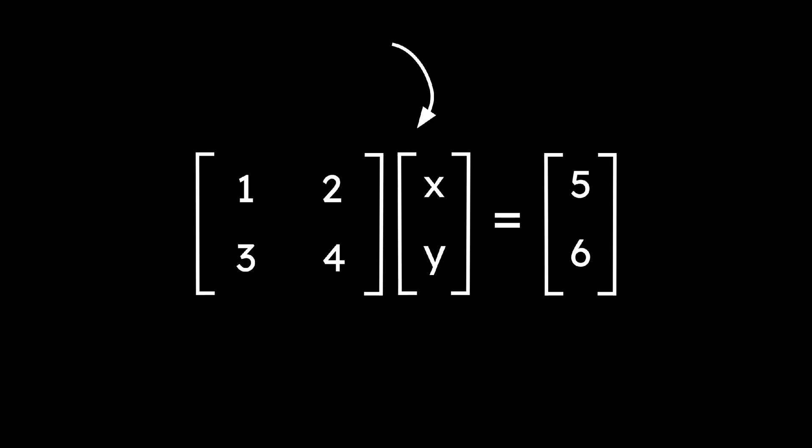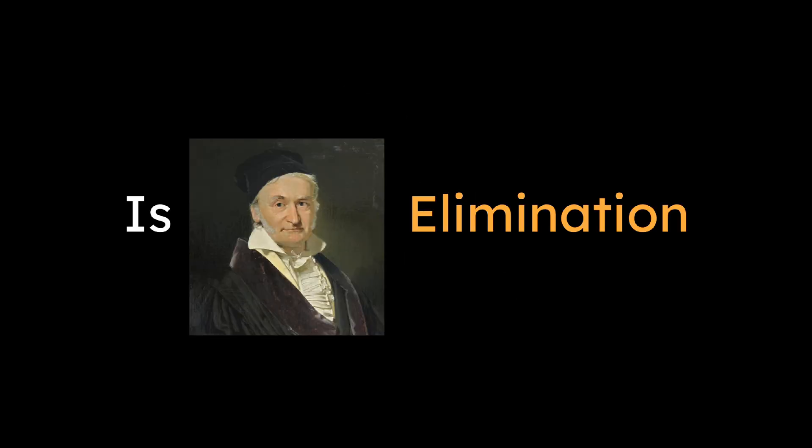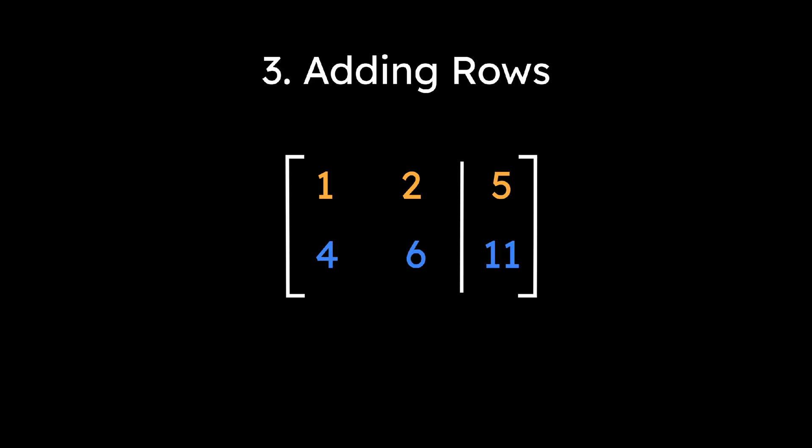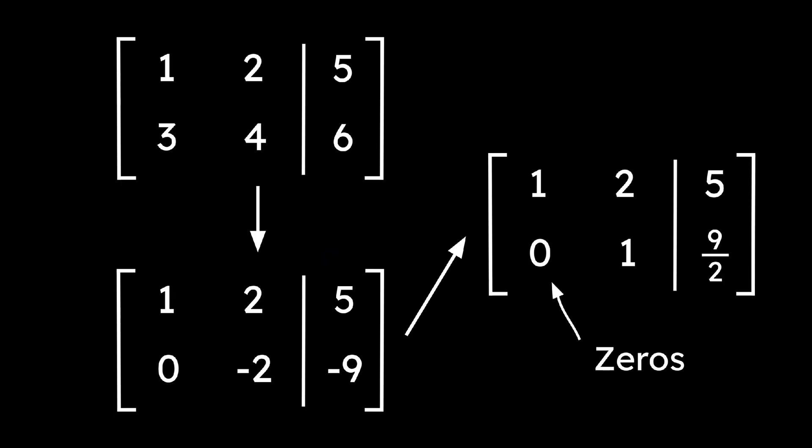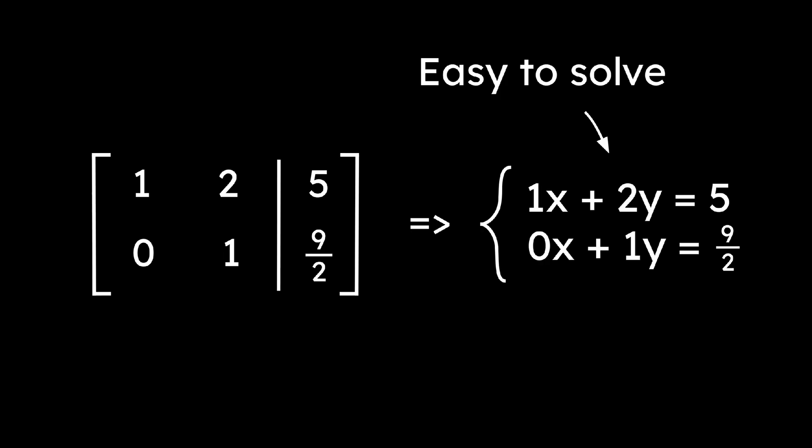Now that we have this form, we can further condense the system into this form, what we call an augmented matrix. One method for solving these matrices is Gaussian elimination, also known as row reduction. In the method, we perform three basic row operations: swapping rows, multiplying a row, and adding rows. Using these row operations, we can simplify the matrix into a form with zeros below the main diagonal. Then, we convert the augmented matrix back into a system, and it's easy to solve.